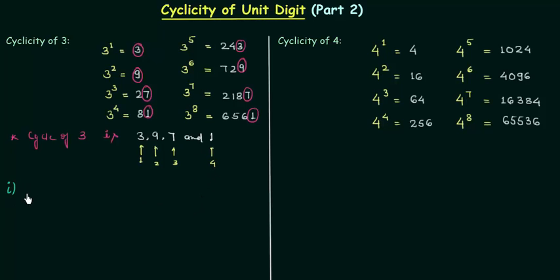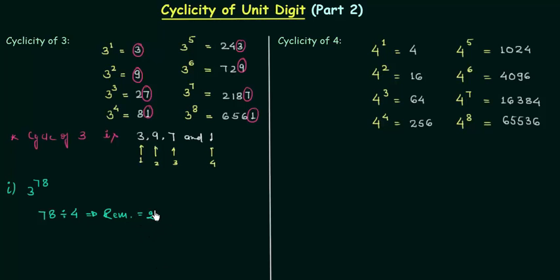Now we will move to the first example. The number is 3 raised to power 78 and we have to find the digit at the unit place. We will divide 78 by 4 because there are 4 digits in the cycle, and the remainder is equal to 2. When the remainder is 2, it means the second term of the cycle is at the unit place, and the second term is 9. So 3 raised to power 78 will have 9 at the unit place.